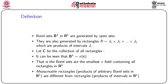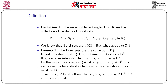It is necessary to distinguish between measurable rectangles and rectangles. Rectangles are products of intervals in the real line, whereas measurable rectangles are products of arbitrary Borel sets in R1. So the first definition: the measurable rectangles D in R are the collection of products of Borel sets — that is, D = {B1 × B2 × ... × Bk} where each Bi is a Borel set in the real line. We call this collection D the measurable rectangles.